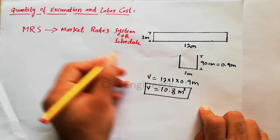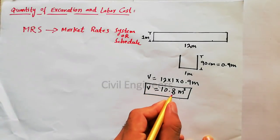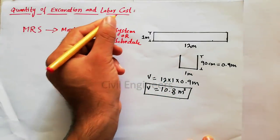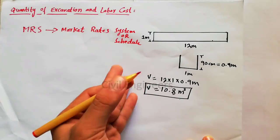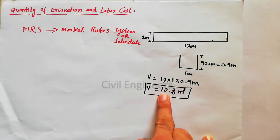So now, quantity of excavation we can find when we find the volume of excavation with the help of this formula. I have already done this. Now I have to find the labor cost. So this is the volume. What will be the labor cost for this volume or for this foundation excavation?